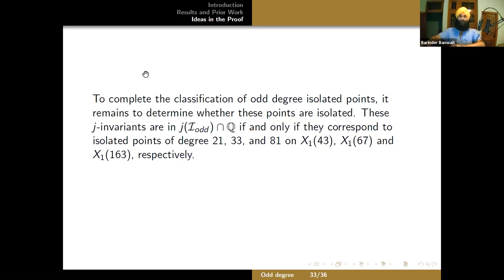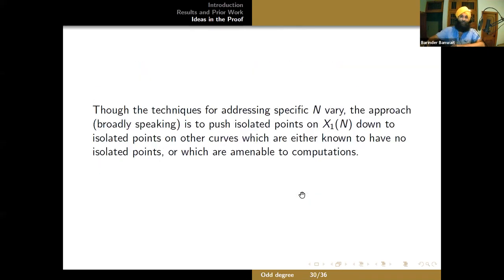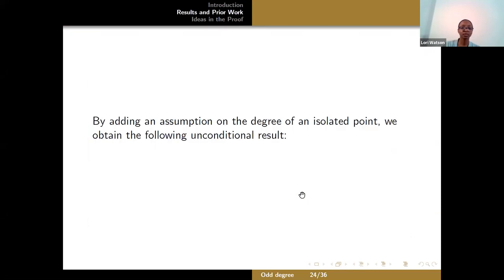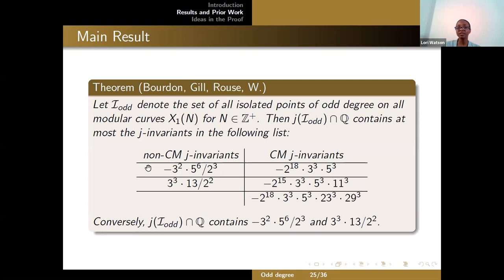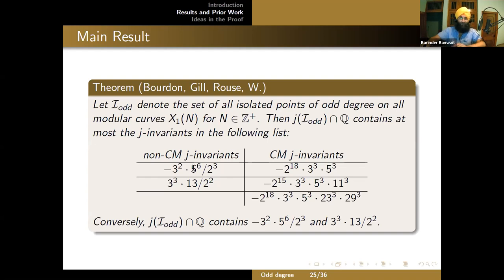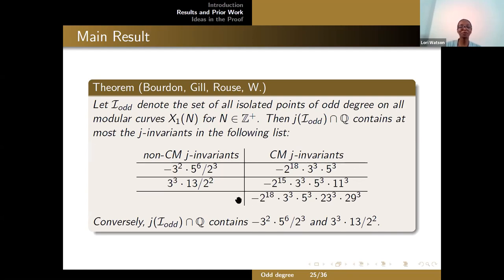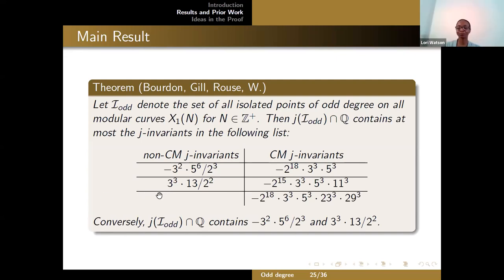I had a question about the isolated points you found in the table — do any of them correspond to sporadic points in fact? Yes. The first CM J invariant: this degree 3 point is a sporadic point, originally found by Philip Nyman, and it's degree 3 over Q. The others are definitely not sporadic — the second non-CM J invariant is isolated but occurs in a degree where there are infinitely many other points of that same degree. Isolated, but not sporadic.